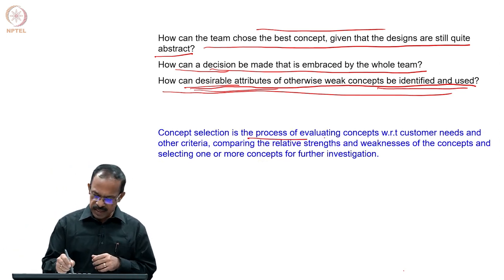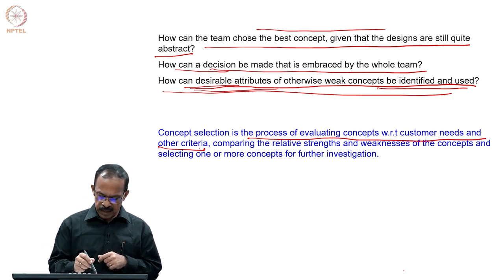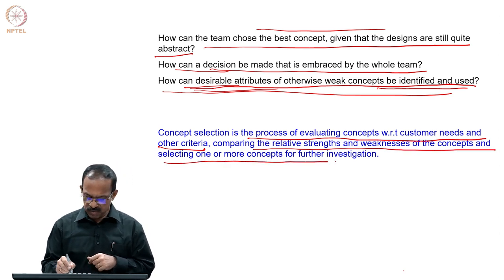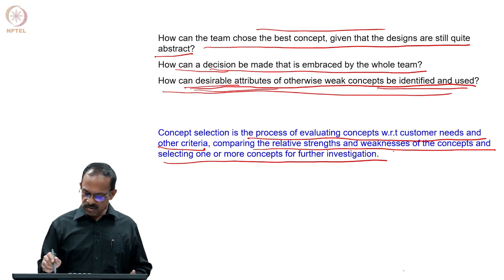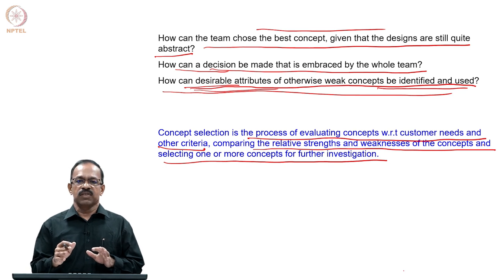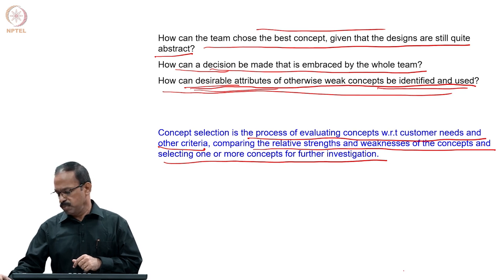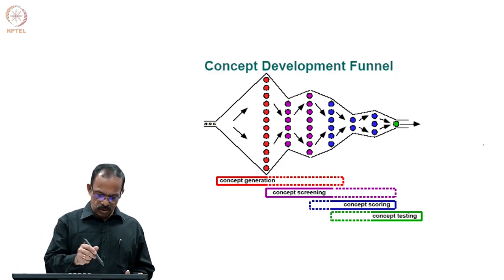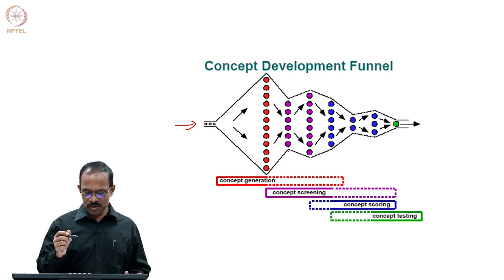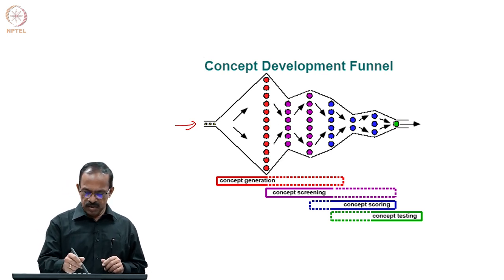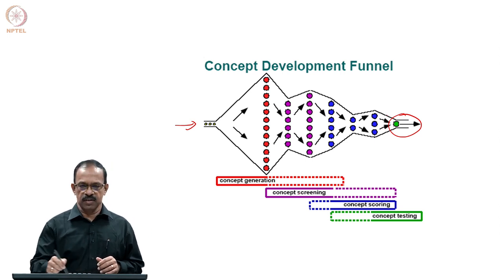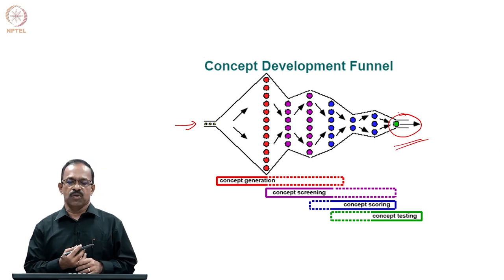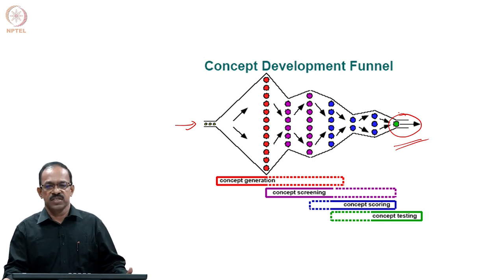Concept selection is the process of evaluating concepts with respect to customer needs and other criteria, comparing the relative strengths and weaknesses of the concepts, and selecting one or more for further investigation. We evaluate concepts against customer needs and other identified criteria, compare relative strengths and weaknesses, and select the best concepts to take forward. You have a problem, generate a large number of ideas, convert them into concepts, and send them through a selection process to get the best concept — with multiple stages.